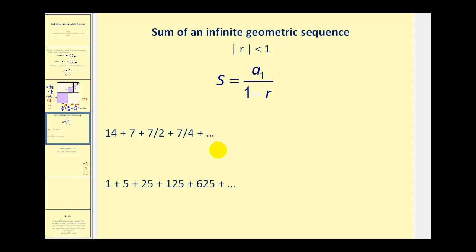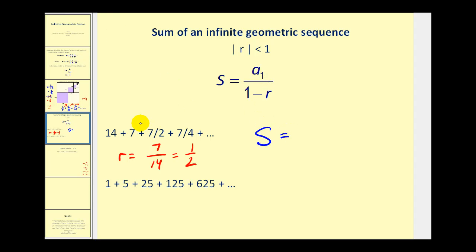Let's take a look at a couple of other examples and see if we can find the sum of these series. We should first determine the value of r, then determine if the absolute value of r is less than one — if it's not, we cannot find the infinite sum. To find r, we select any term and divide by the term before it. Starting with the second term, we take seven divided by fourteen, which equals one-half. The absolute value of one-half is less than one, so we can find the infinite sum. The infinite sum equals the first term, fourteen, divided by one minus r, which is one-half. Fourteen divided by one-half is the same as fourteen times two, giving us a sum of twenty-eight.